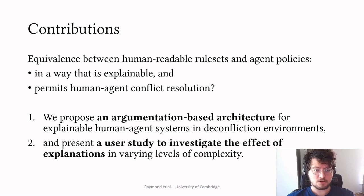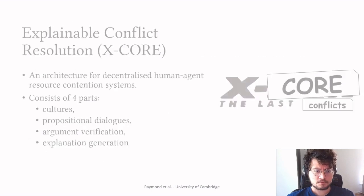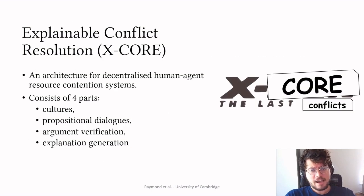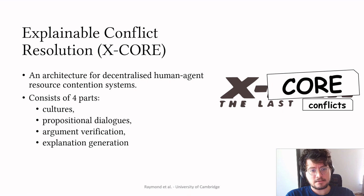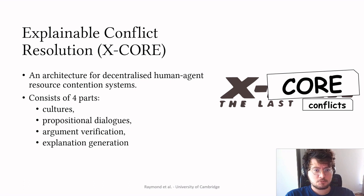We're going to start looking into this argumentation-based architecture first, called X-Core. The X-Core architecture stands for explainable conflict resolution. X-Core is an architecture for decentralized human-agent resource contention systems and it consists of four parts: cultures, propositional dialogues, argument verification, and explanation generation.